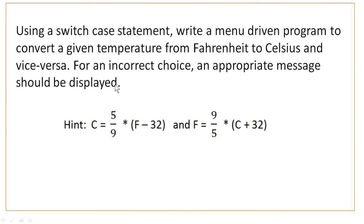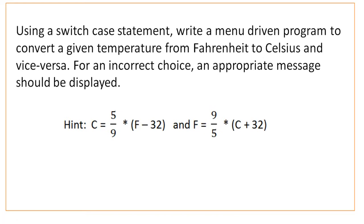If you enter some other number, you have to display a wrong message. First, the formulas: if you want to find the centigrade value, input a Fahrenheit value F and calculate using C = 5/9 × (F − 32) to convert Fahrenheit to centigrade. For centigrade to Fahrenheit, use F = 9/5 × C + 32. Input the centigrade value C, calculate using this formula, store the result in F, and display it.